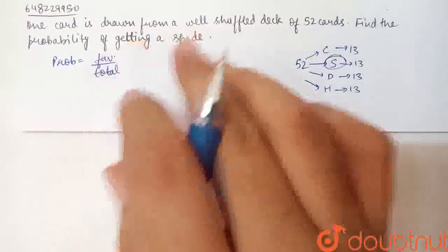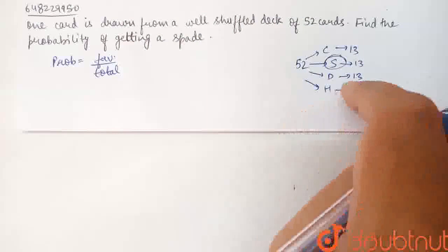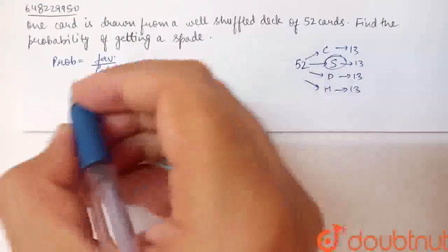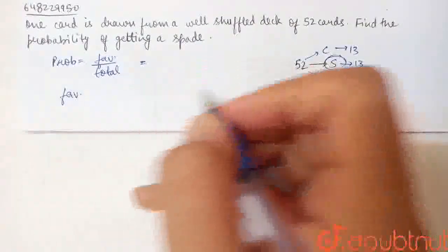To find the probability of getting a spade, we need favorable cases. How many spade cards are there? Spade has 13 cards. So the favorable cases are all the spades - favorable is 13.